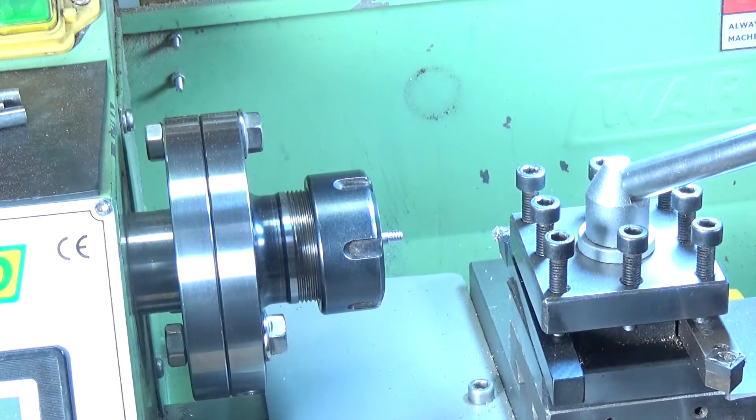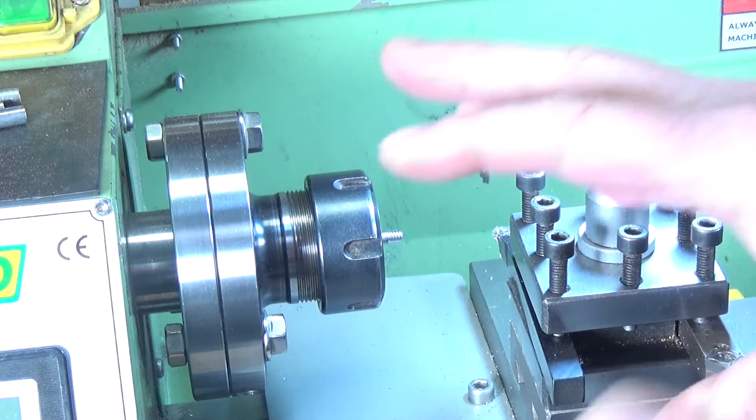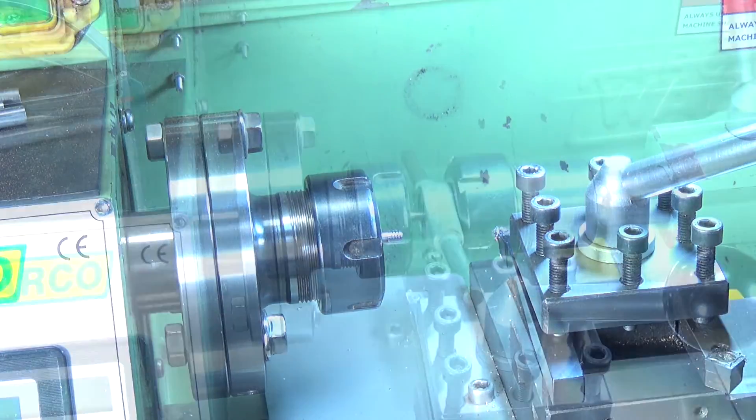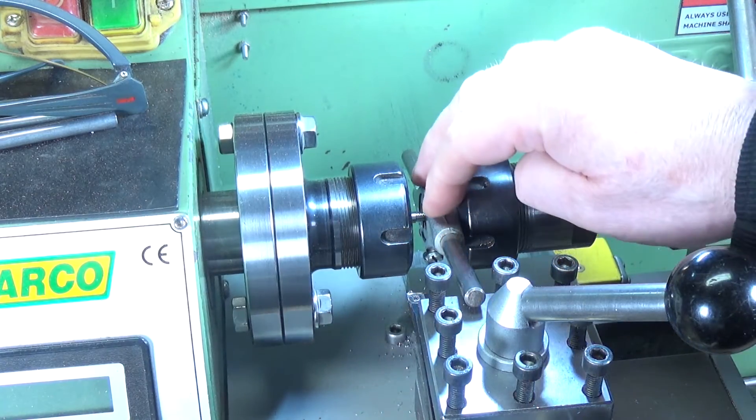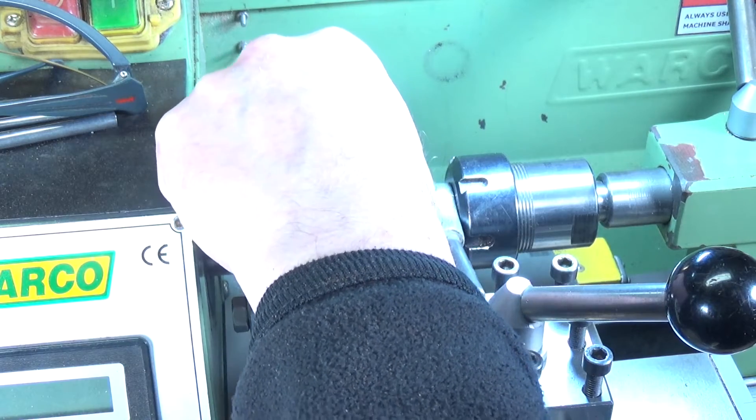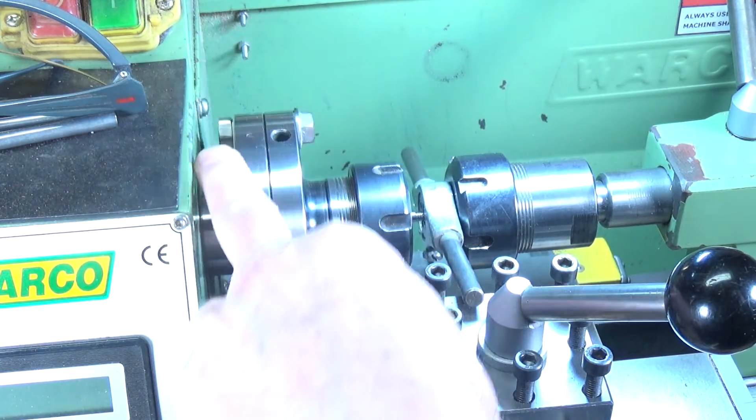It's not running quite true, but this doesn't need to be super accurate. We're just making it slightly smaller so I can cut a new thread. This time I've actually got the right die nut in there, so hopefully we can recut the thread to what it's supposed to be.